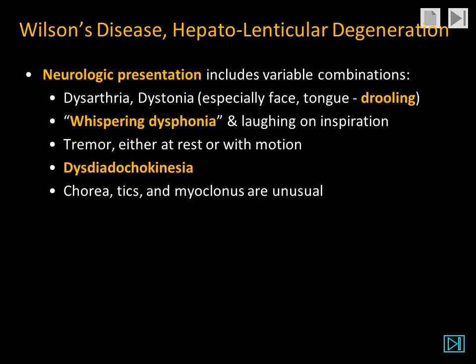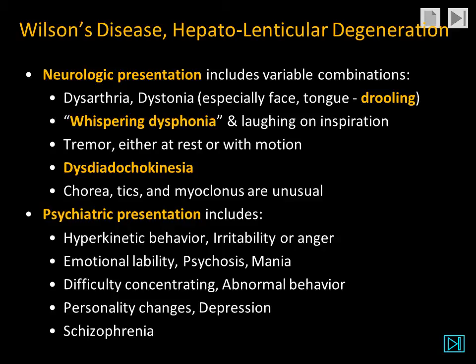The neurologic presentation is variable and includes dysarthria and dystonia, which may involve the tongue causing drooling — which was present in our patient. Whispering dysphonia was also present in our patient. They may have tremor, dysdiadochokinesia, and chorea; tics and myoclonus are unusual.